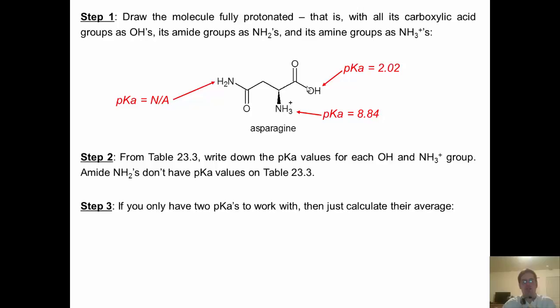Step 3. If you only have two pKa values to work with, then just calculate your average, and you're done. Here's the average between these two pKa values. 2.02 plus 8.84 divided by 2 gives us 5.43 as the isoelectric point for asparagine.